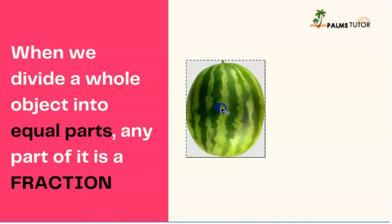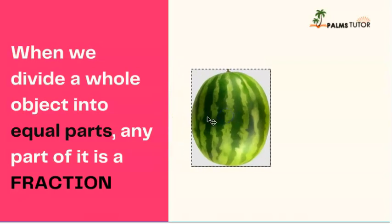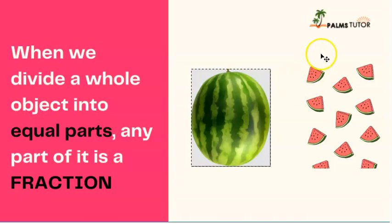So consider this watermelon. If you have this watermelon and it's divided into equal parts like this, can you see them? Each of these parts are fractions.